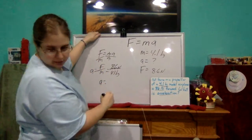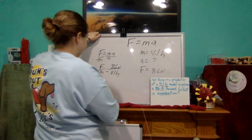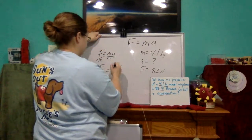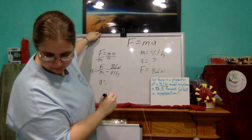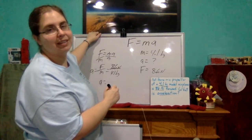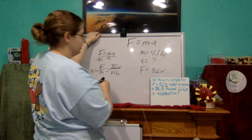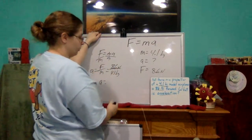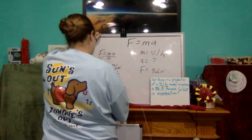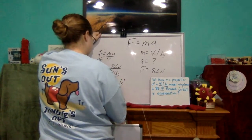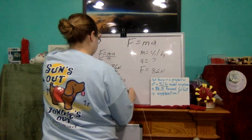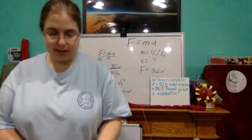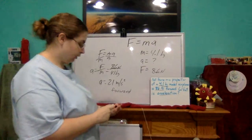So we have 8.6 newtons divided by 4.1 kilograms — we get 2.1 meters per second squared forward. In case you're wondering why I keep looking back, I have my notes so that I don't have to sit here doing the calculations. They're already pre-done.